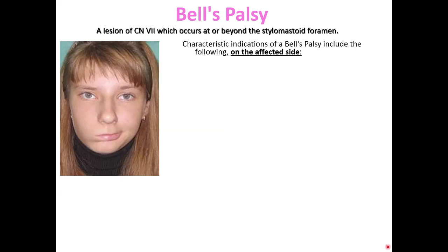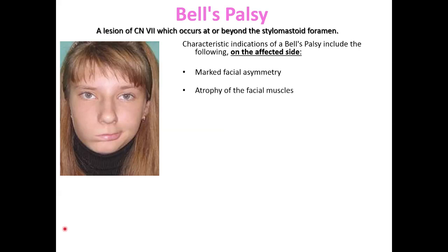Characteristic indications of Bell's Palsy include the following. On the affected side — in this picture the right side is affected while the left side is healthy — we can find marked facial asymmetry, then atrophy of the facial muscles, drooping of the eyeball, and drooping of the right eyebrow.